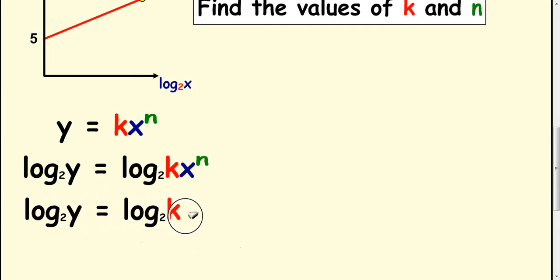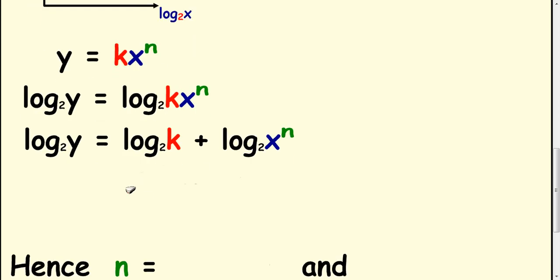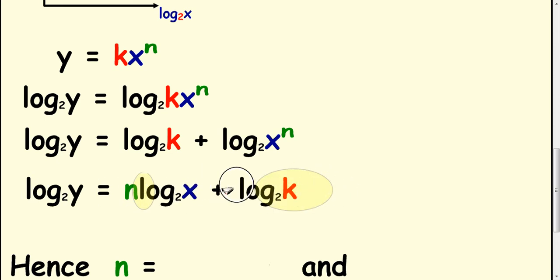So, log k to the base 2, log x to the n to the base 2. Take your n down and rearrange it. I'll just move that over a wee bit. So, what we have here is this is your intercept and n is your gradient.